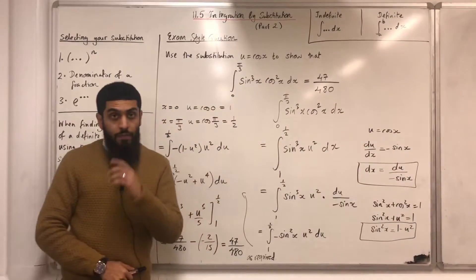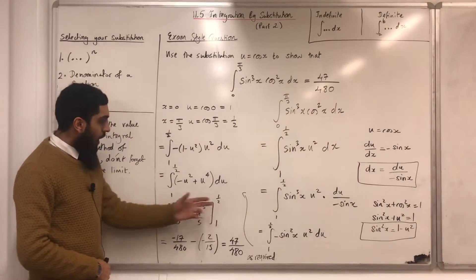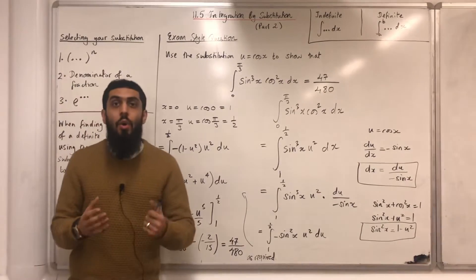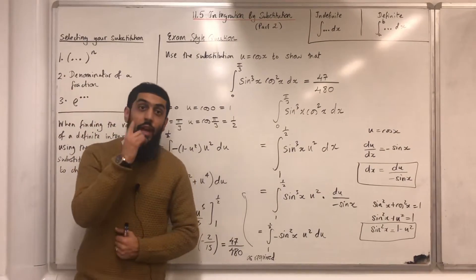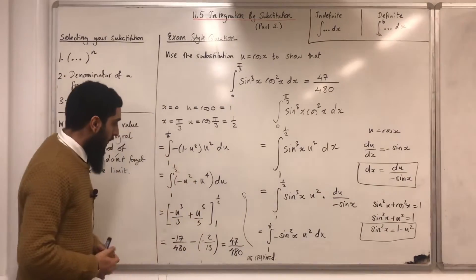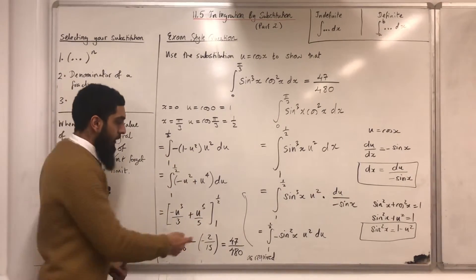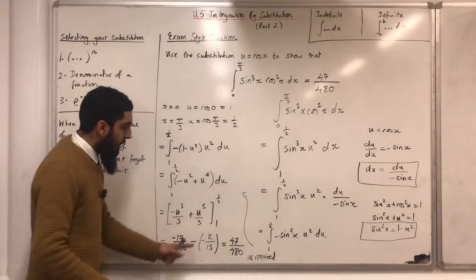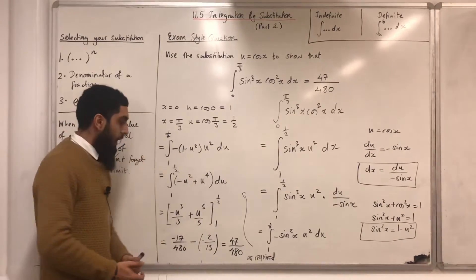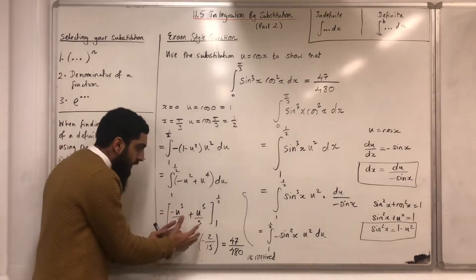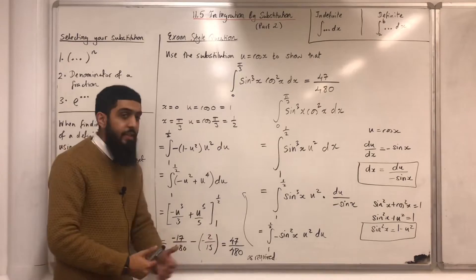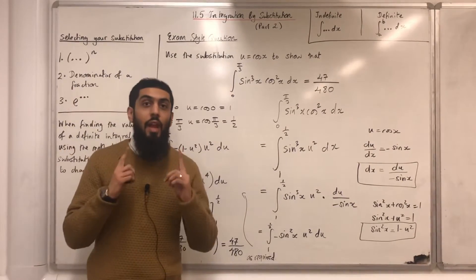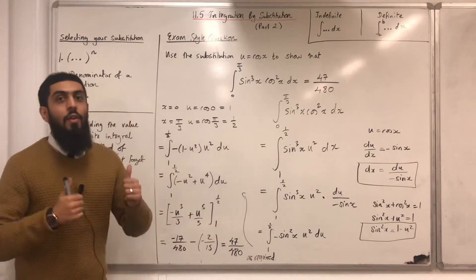After substituting a half into the expression, I get −17 over 480. Minus substituting 1 into the expression gives −2 over 15. So this simplifies to 47 over 480, as required.